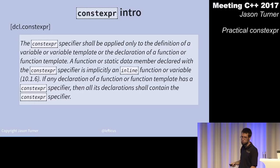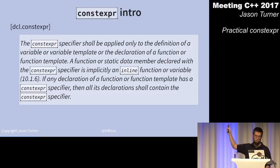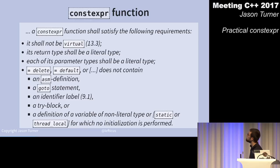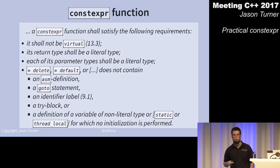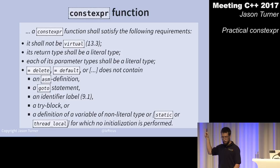A constexpr function shall not be virtual. Its return type shall be a literal type, and each of its parameter types shall be a literal type. It must not contain an asm definition, a goto statement, an identifier label, or a try block.